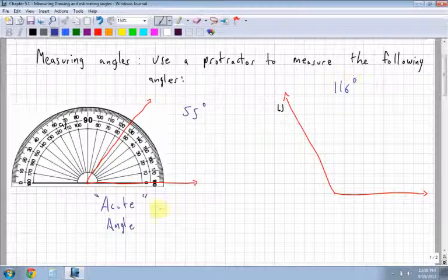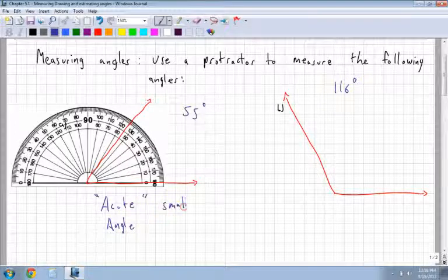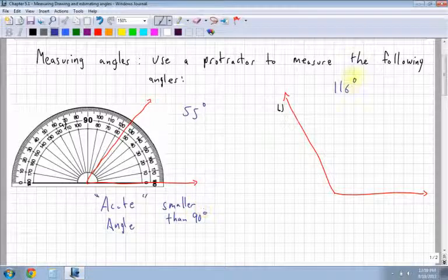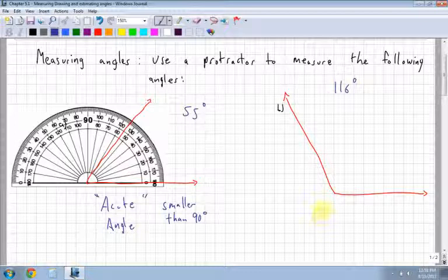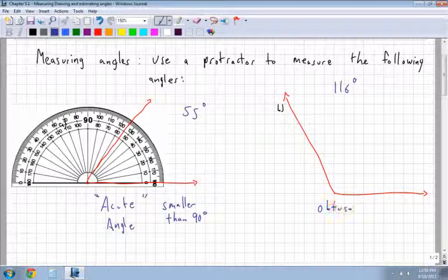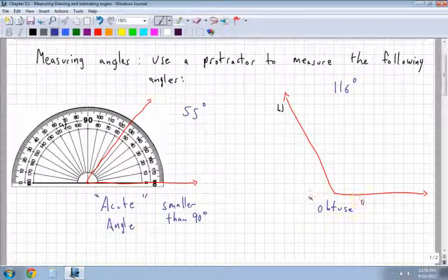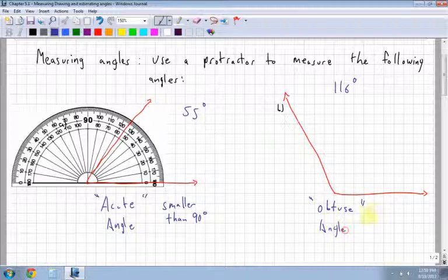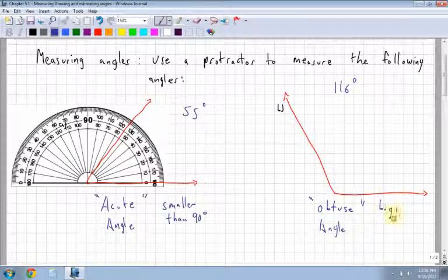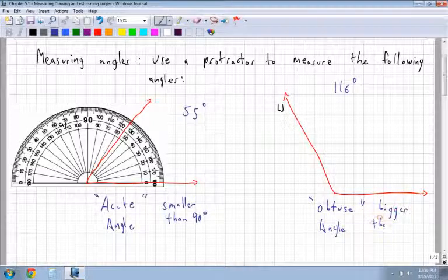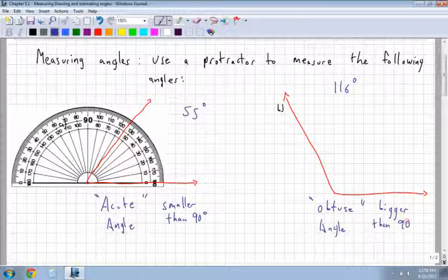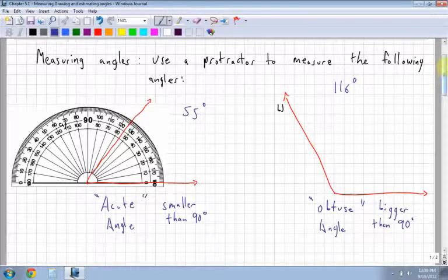This one is larger than 90 degrees, so it's 116. So we call this one an obtuse angle and this means bigger than 90 degrees. So how to measure angles.